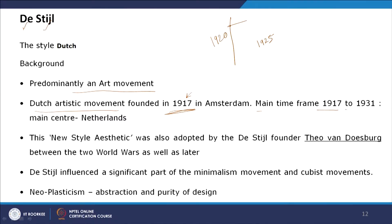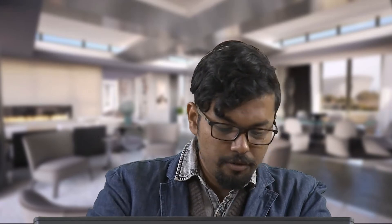The main time frame of De Stijl was 1917 to 1931. The main center was the Netherlands, also in Europe, while the Bauhaus center was Germany. They called it a new style of aesthetics, and Theo van Doesburg was one of the key protagonists of this style. He was mostly a painter, but he also designed some conceptual architectural buildings and a few interior designs. De Stijl got significant influence in the minimalism movement and the cubist movement — the way cubist painters broke their visual abstraction from figurative form into rectilinear geometry, which also has similarity with the De Stijl style.